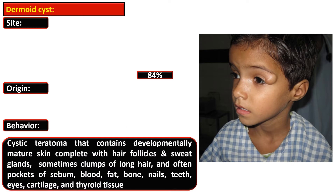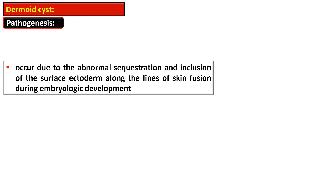They are cystic teratomas that contain developmentally mature skin complete with hair follicles and sweat glands. Sometimes there is a clump of long hair and pockets of sebum, blood, fat, bone, nail, teeth, eye, cartilage, and thyroid tissue present in the cyst wall. Dermoid cysts result from an abnormal alteration in fetal development.